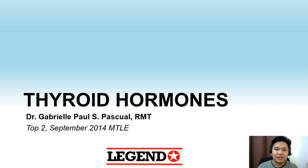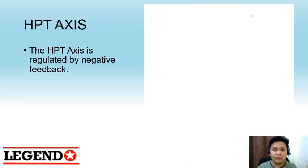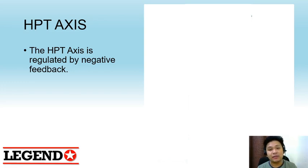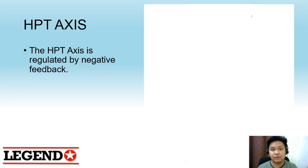Hi everyone, this video is about thyroid hormones. Your thyroid hormones are produced by the thyroid gland. But aside from the thyroid gland, the hypothalamus and the pituitary gland also play important functions in the production of your thyroid hormones.